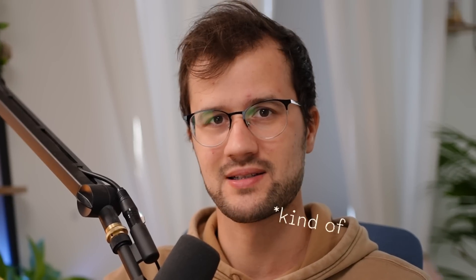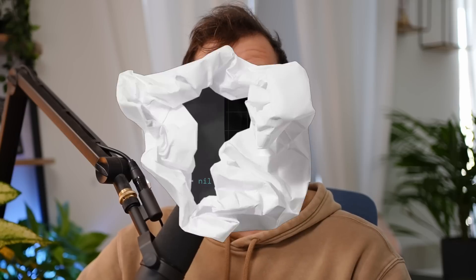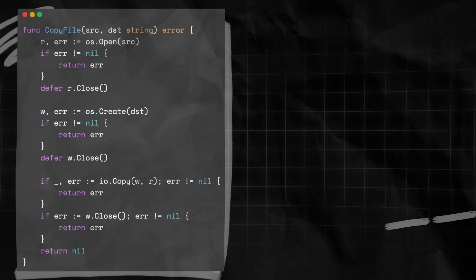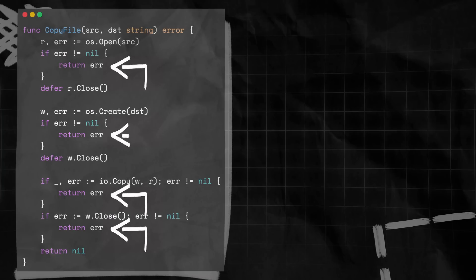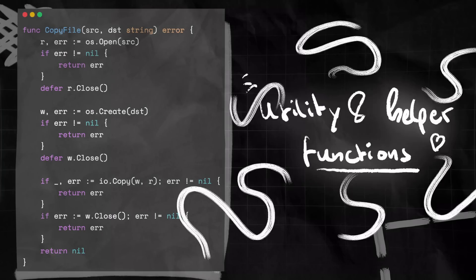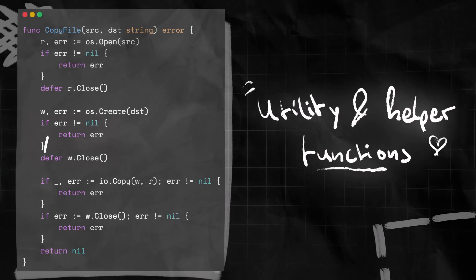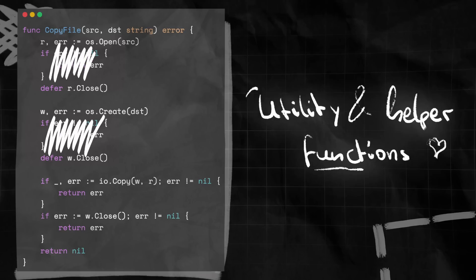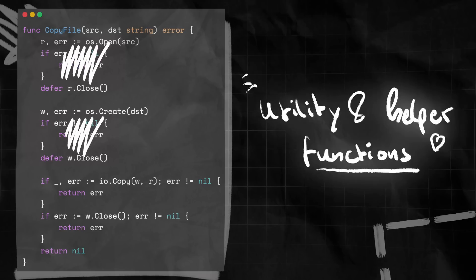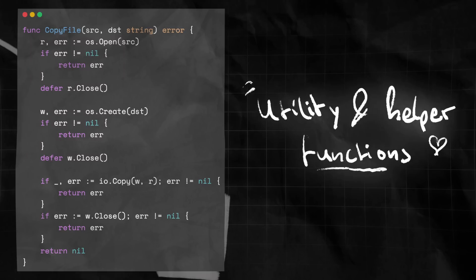Let's be honest here, error checking and error handling in Golang sucks, especially if you want to propagate errors to functions. However, there are some utility or helper functions that you can leverage to kind of reduce these redundant error checks.